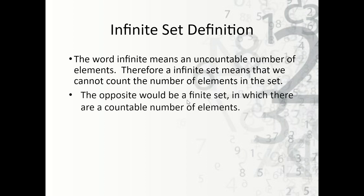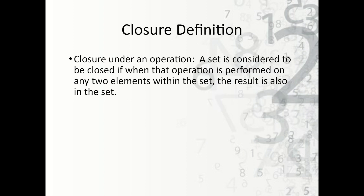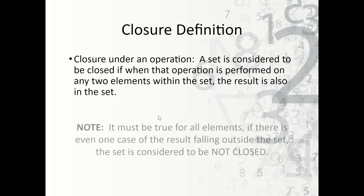An example of an infinite set would be the set of integers — there's no limit to the number of integers we can count. Now, closure definition: closure under an operation means a set is considered to be closed if, when that operation is performed on any two elements within the set, the result is also in the set. Note that this must be true for all elements in the set. If there is even one case where the result falls outside the set, then it is considered to be not closed.